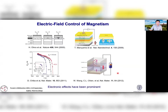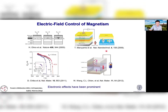Electric field control of magnetism has attracted tremendous interest over recent years. Here are some examples of seminal works in the field, including using electric field to control the Curie temperature of magnetic semiconductors, of metallic ferromagnets, controlling magnetic anisotropy, and magnetic tunnel junctions. Usually the electronic effects are the predominant ones.